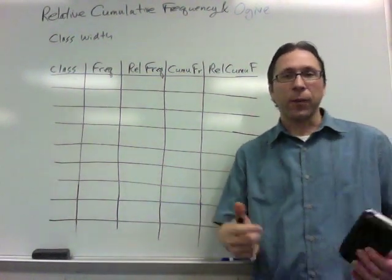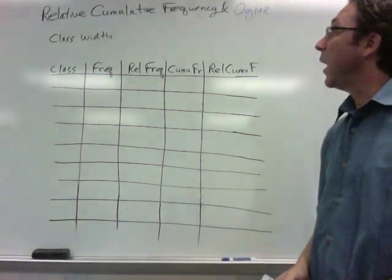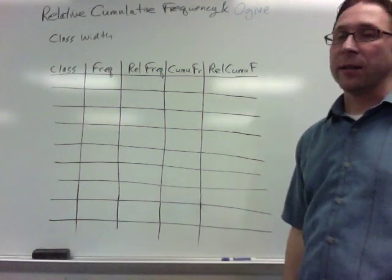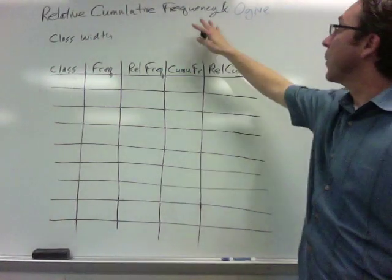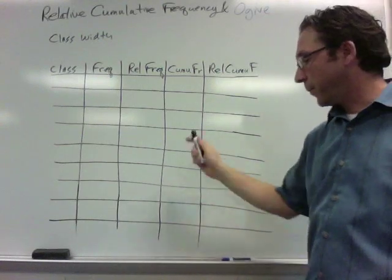Here's an example of how to find the relative cumulative frequency distribution by filling out a table, and also an example of how to turn that histogram into an ogive.